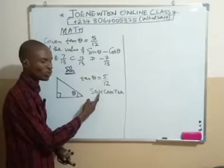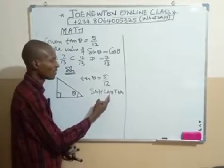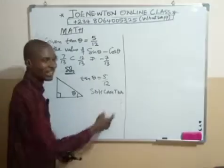Cosine is adjacent over hypotenuse. Tangent is opposite over adjacent.